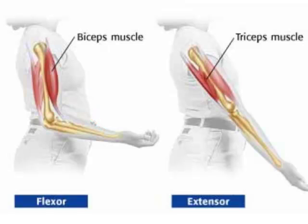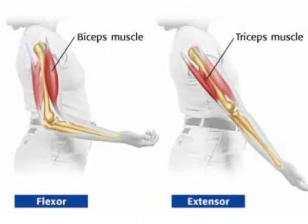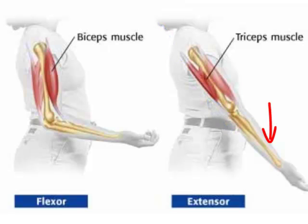Once your bicep contracts, it stays like that until you activate your triceps muscle, which is the extensor. Extensor muscles straighten out body parts. As the tricep muscle contracts and gets shorter, it pulls your forearm down to straighten out your arm — that's why it's called an extensor. In the leg, flexor muscles would be your hamstrings, which contract to bend your leg, while your quadricep muscles on the top of your leg contract to extend your leg to kick a soccer ball.